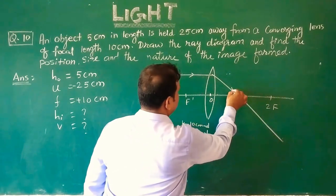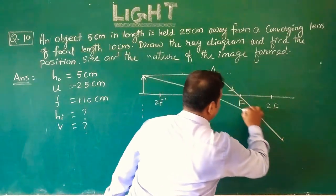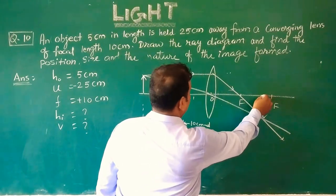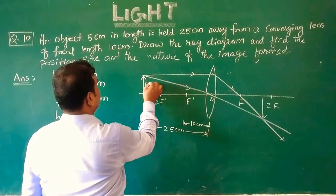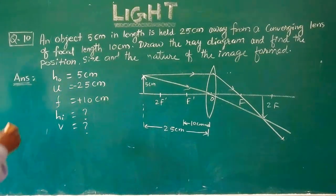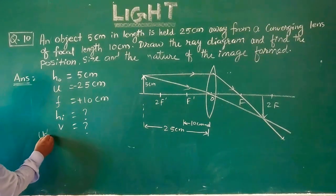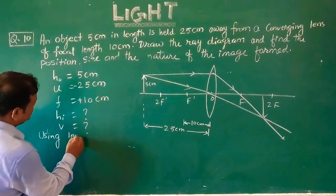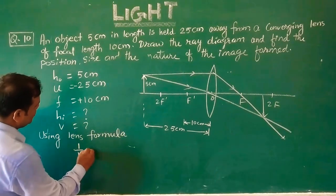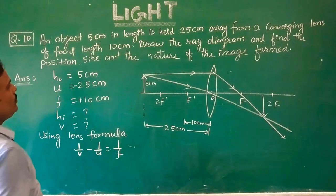The ray will pass like this; the second ray we are taking from the optical center. See where the image is forming — it will form here. The object height is given as 5 centimeter. Now we will use this diagram. We will use the lens formula: 1/V minus 1/U equals 1/F.